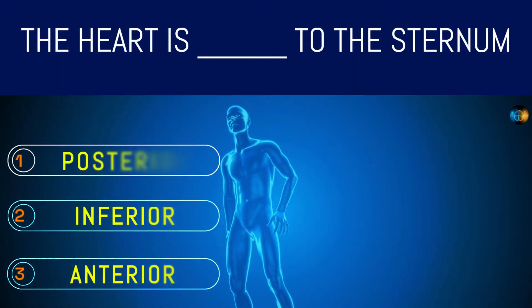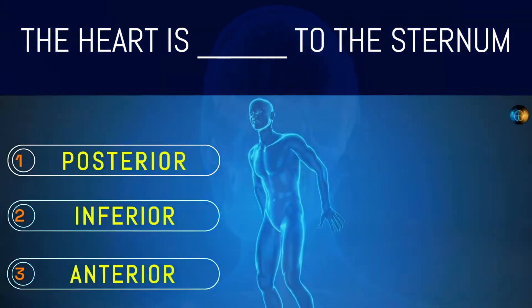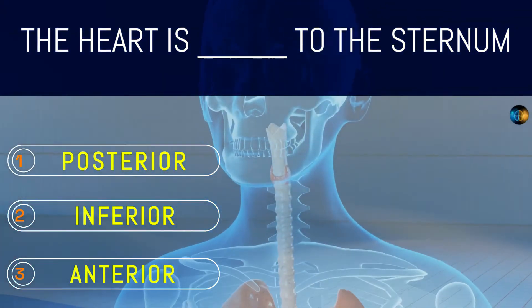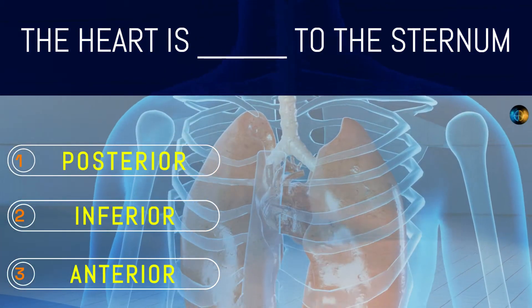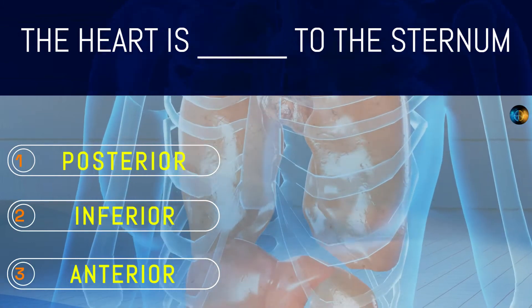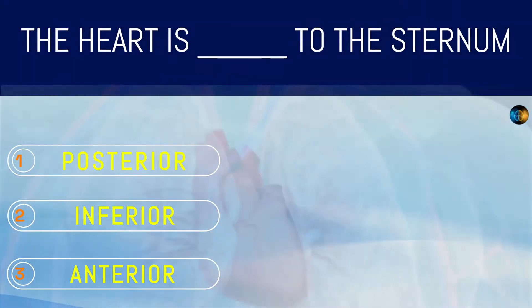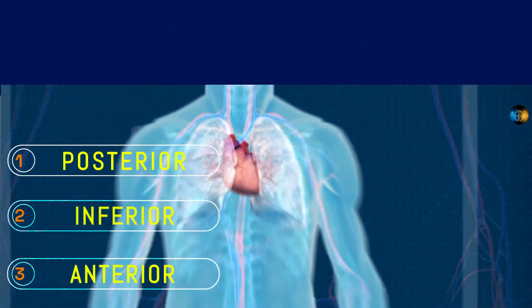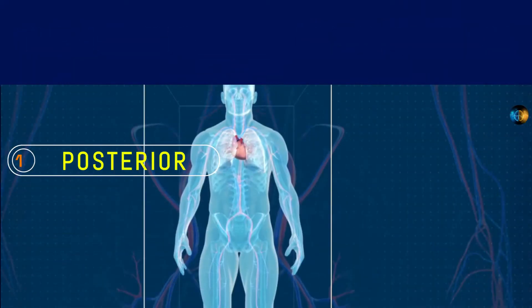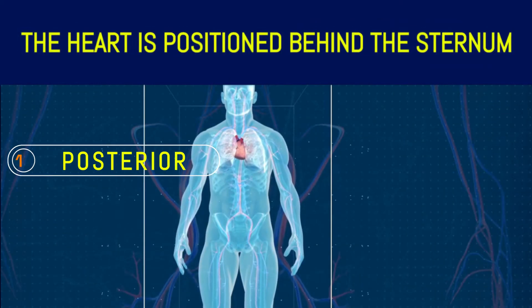The heart is what to the sternum? Posterior, inferior, or anterior? Posterior. The heart is positioned behind the sternum.